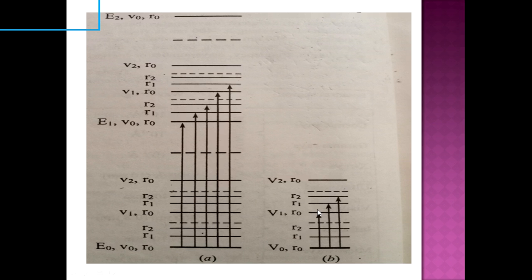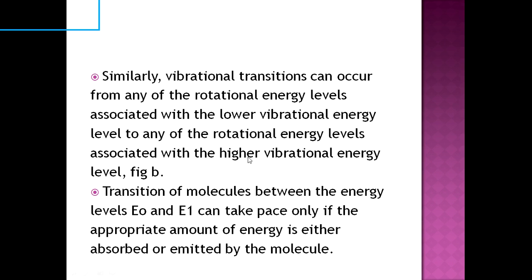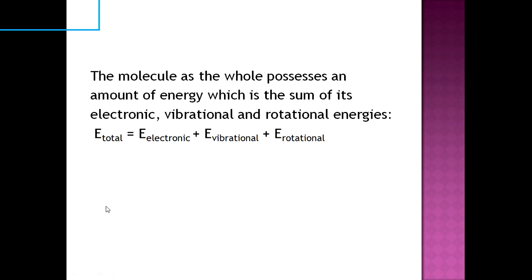یہ lower vibrational energy level سے start ہوتی ہے، electrons lower vibrational energy level سے excite ہو کر higher vibrational energy levels میں move کر جاتے ہیں۔ کسی بھی molecule کی transition E0 سے E1 میں تب ہوتی ہے جب وہ molecule یا تو energy absorb کرے یا پھر emit کرے. The molecule as a whole possesses an amount of energy which is the sum of its electronic, vibrational, and rotational energy.